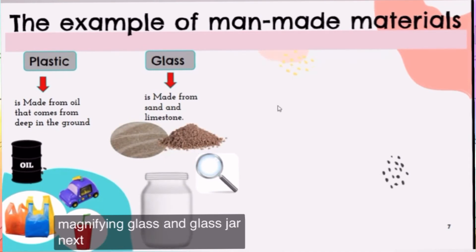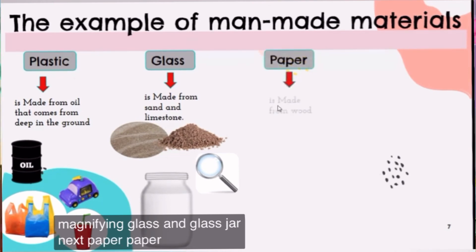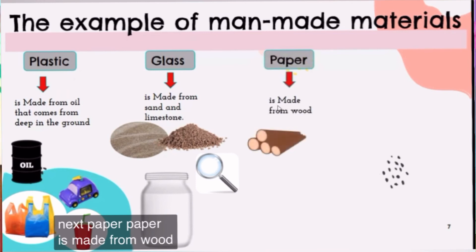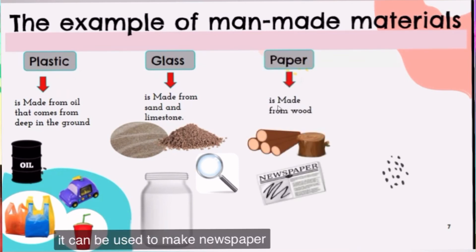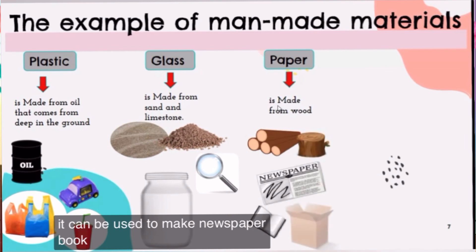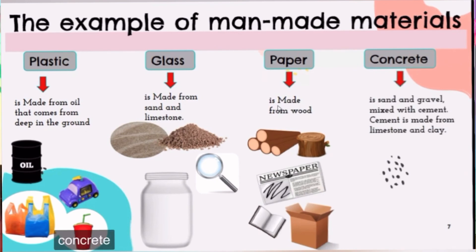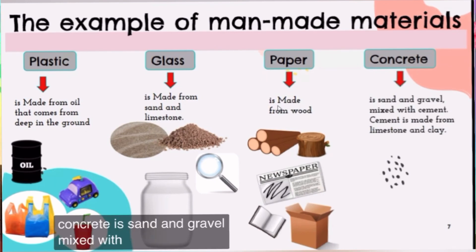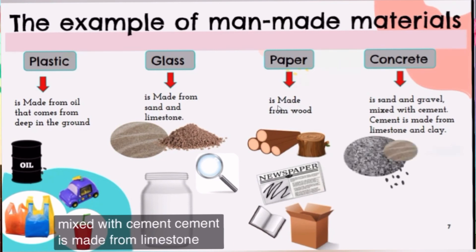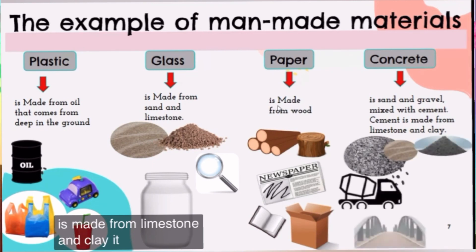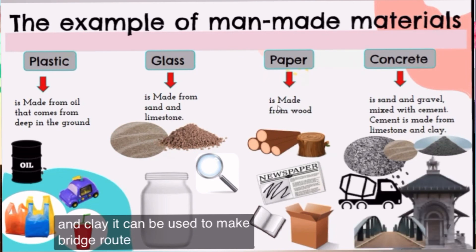Next, paper — paper is made from wood, and it can be used to make newspapers, books, and cardboard boxes. The last one is concrete — concrete is sand and gravel mixed with cement. Cement is made from limestone and clay. It can be used to make bridges, roofs, and buildings.